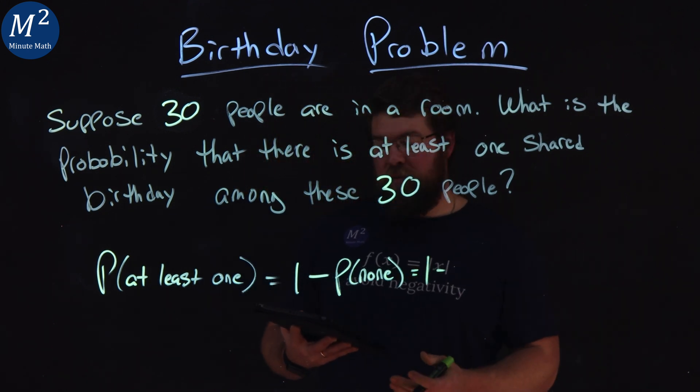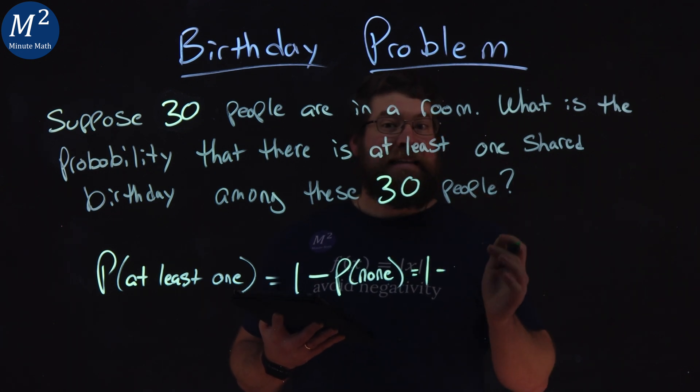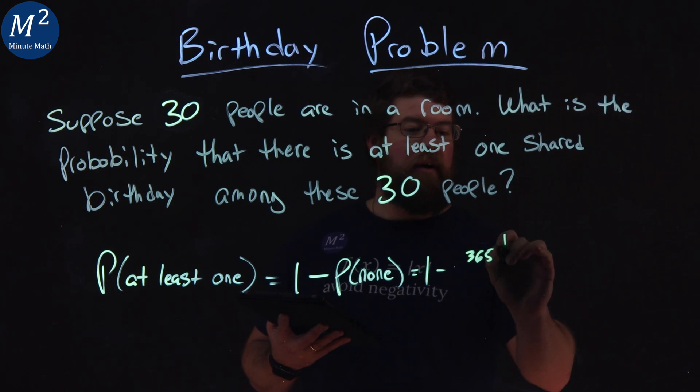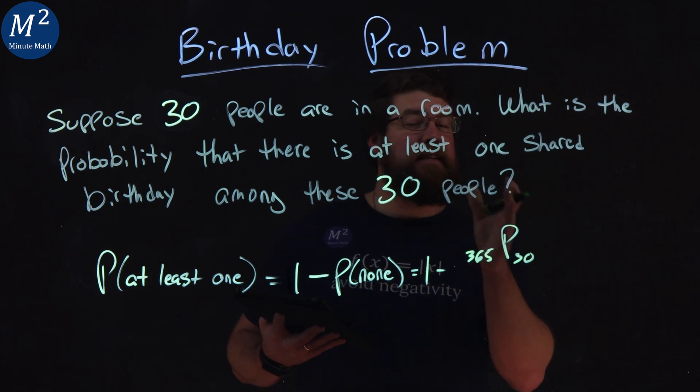So we have one minus, if you remember from our previous examples, we can use permutations to write this more condensedly. There's 365 days in the year and we have to choose, where order matters, 30 people. So they can't have the same birthday.